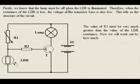Firstly, we know that the lamp must be off when the LDR is illuminated. Therefore, when the resistance of the LDR is low, the voltage at the transistor base is also low. This tells us the structure of the circuit.